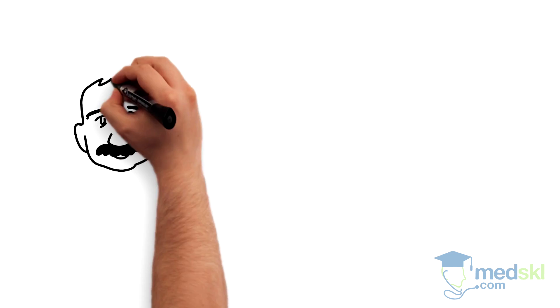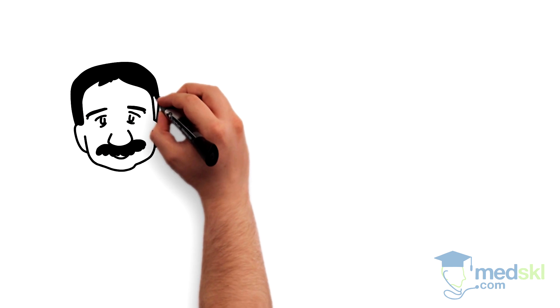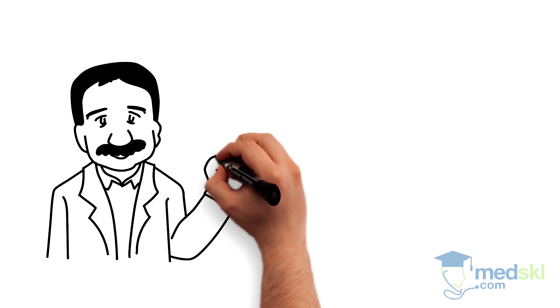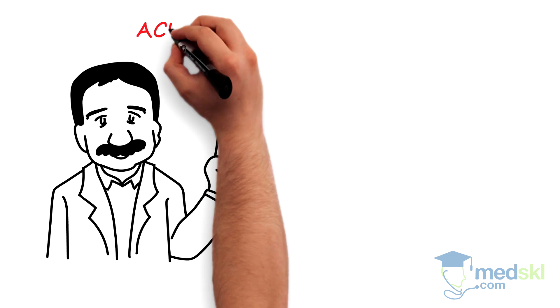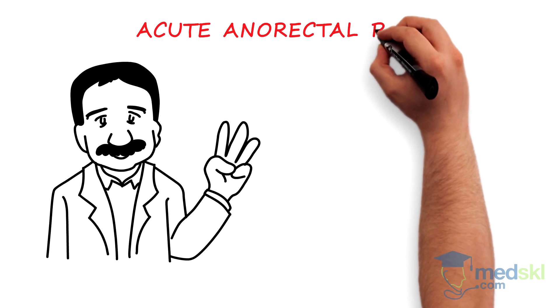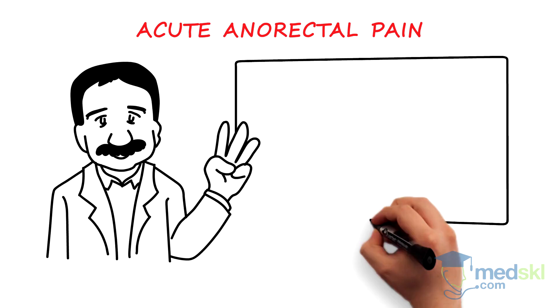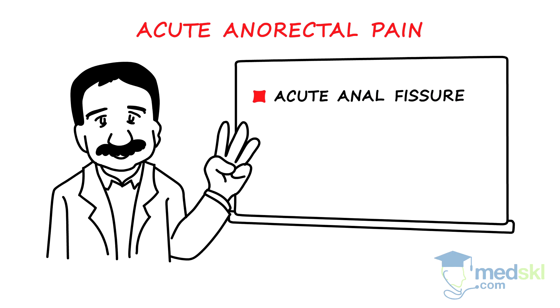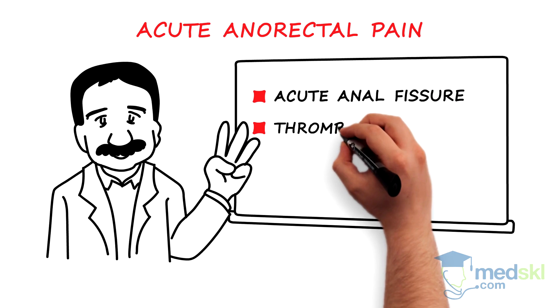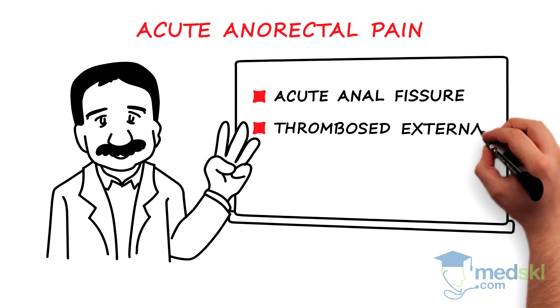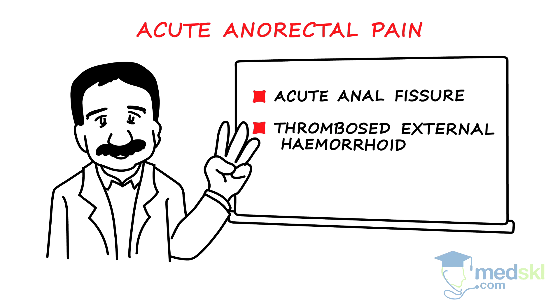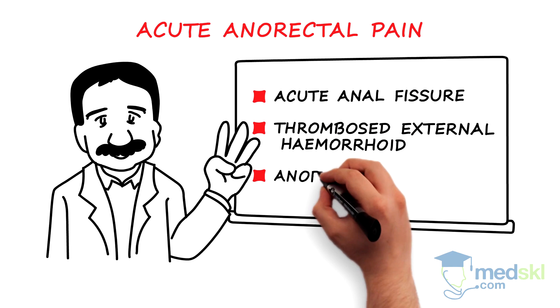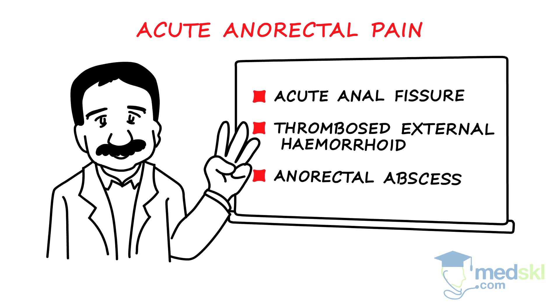There are three conditions which cause almost all instances of acute anorectal pain: first, an acute anal fissure; second, a thrombosed external hemorrhoid; and third, an anorectal abscess.